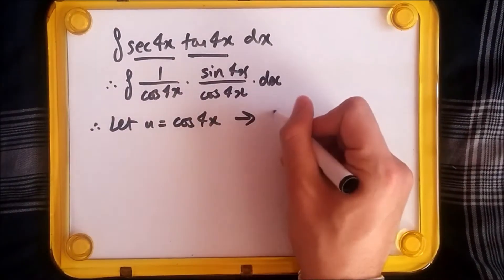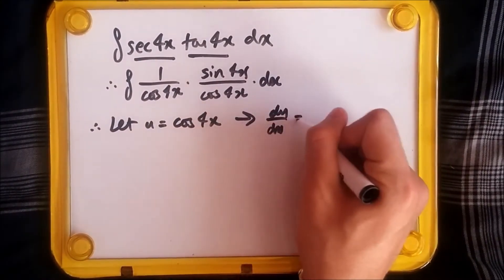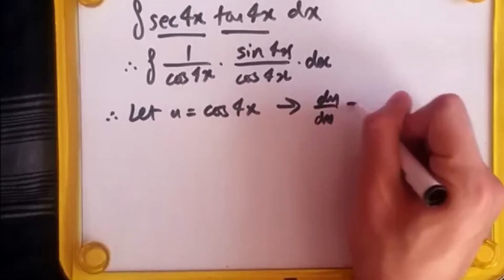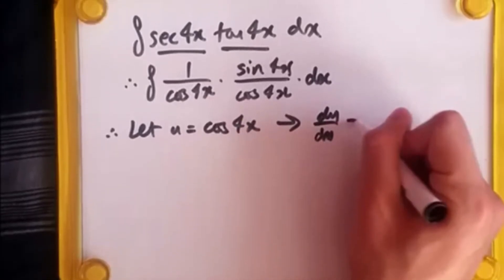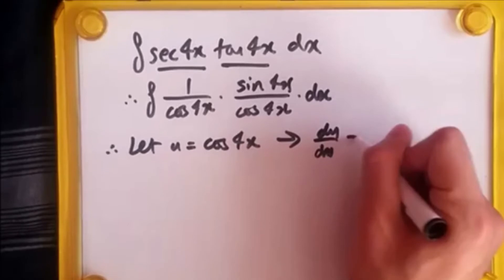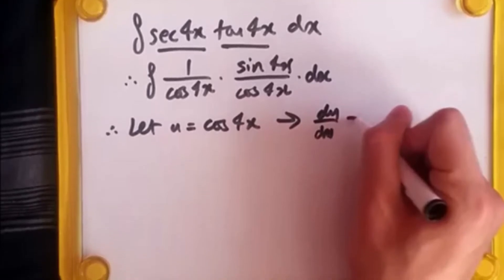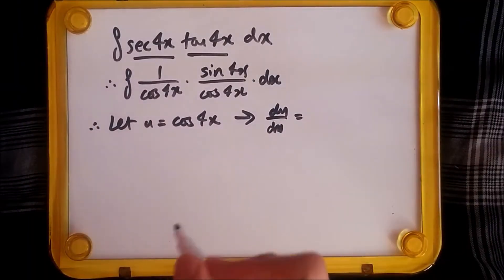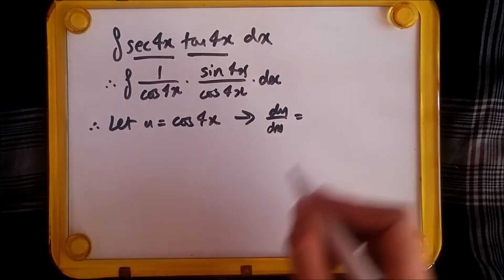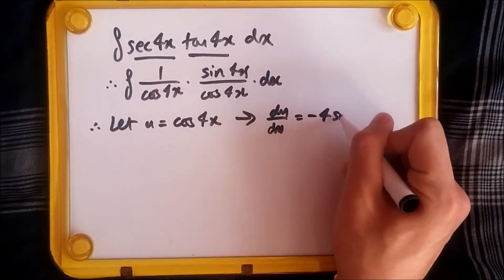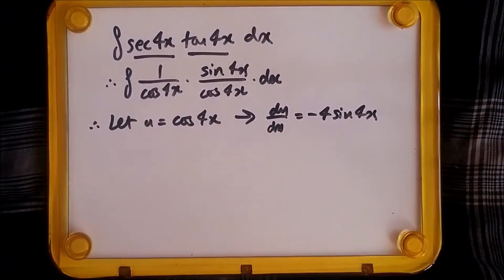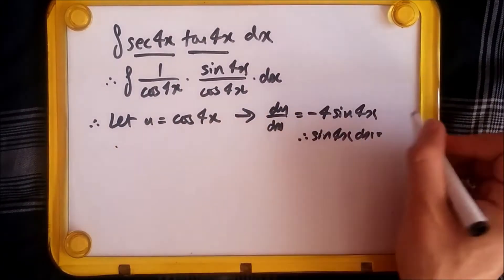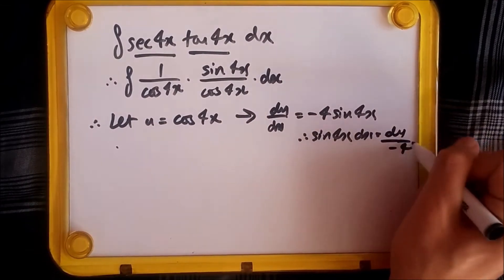We set u = cos(4x) because when we differentiate it, we get a term on the numerator — specifically sin(4x) — which is exactly what we want as part of the du/dx expression. When you do substitution, you need to replace everything comfortably with du. So at the next stage, find du/dx, which gives us -4sin(4x), then make sin(4x)dx the subject: sin(4x)dx = du/(-4).